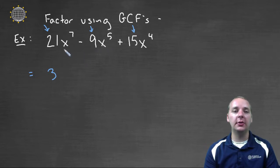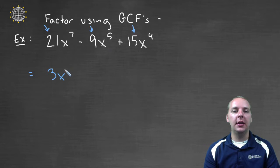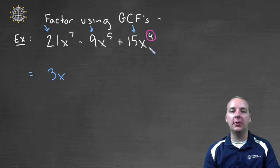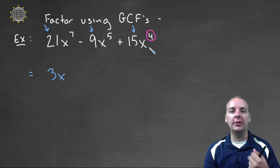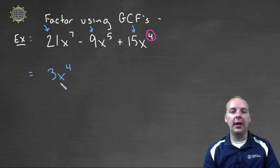I also have some common factors that are x's. We have x to the seventh, x to the fifth, and x to the fourth — so all three do have at least an x. For the GCF, you look at the smallest exponent available, because once those are factored out, that term has no more to give. So we can factor x to the fourth out of all three, making three x to the fourth the GCF.